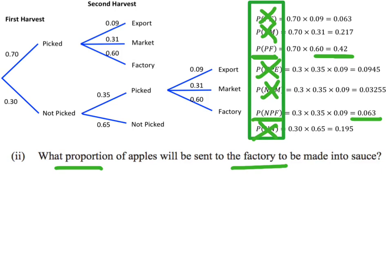We can now write down and say, well, I want to know what the probability of going to the factory is, of an apple being picked at random and going off to the factory. There are two possibilities: I've got my 0.42 and my 0.063. When I'm combining those combinations together, I'm going to add them.